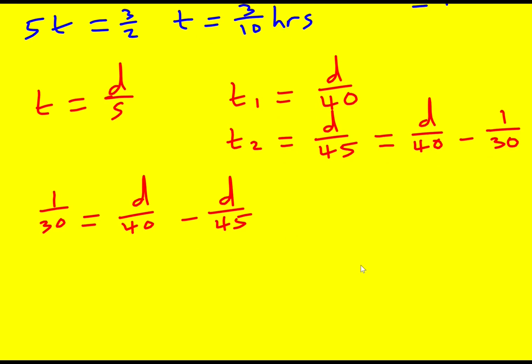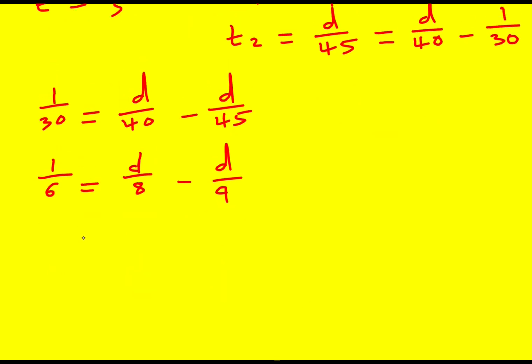So what can we do now? Well, I think I'd be tempted to times through by this common factor of 5. So multiplying each term by 5, I'm going to get 1 over 6 equals d over 8 minus d over 9. That feels like it's a little bit easier to sort these fractions out. Let's get it over a common denominator. I can times this one by 9, so I'm going to get 9d over 72 minus 8d over 72. So 1 over 6 is going to equal d over 72, and that means d is going to be 72 over 6, which is going to be 12.